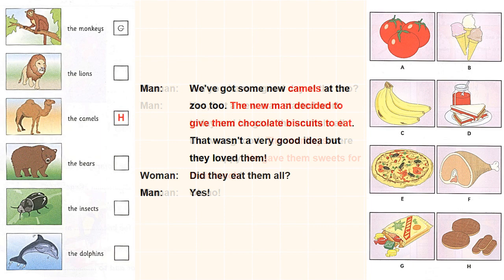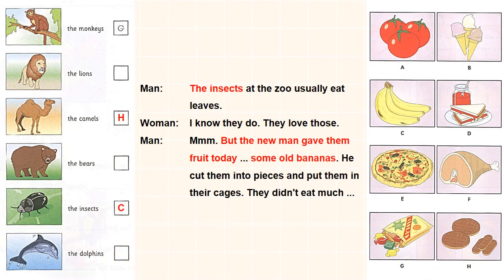We've got some new camels at the zoo too. The new man decided to give them chocolate biscuits to eat. That wasn't a very good idea, but they loved them. The insects at the zoo usually eat leaves, but the new man gave them fruit today — some old bananas. He cut them into pieces and put them in their cages. They didn't eat much.